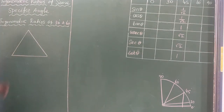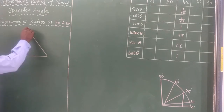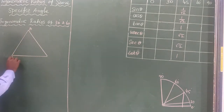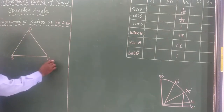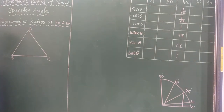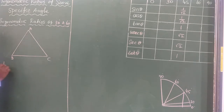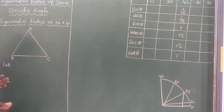I consider a triangle ABC — it is an equilateral triangle. An equilateral triangle means all 3 sides are equal.